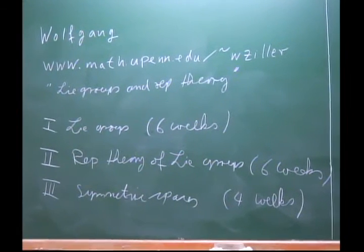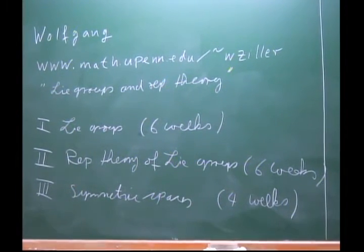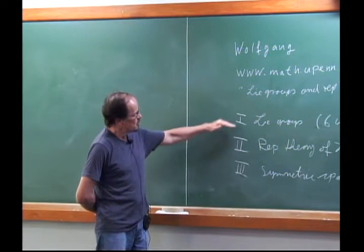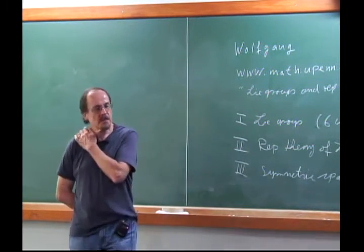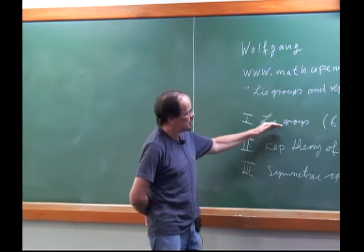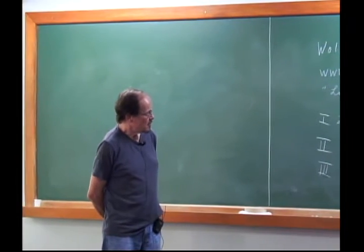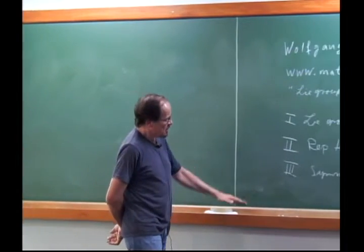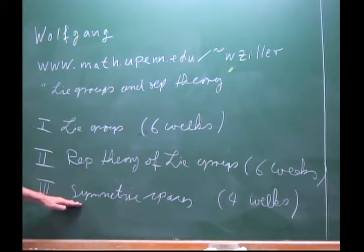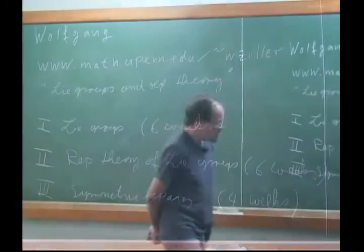As far as prerequisites are concerned, there's no Riemannian geometry required, although you might think so because of part three. For parts one and two, one has to know what a manifold is, what vector fields are, and what Lie brackets are. The last part will have a little bit of geometry, but one can also do it completely algebraically without doing any geometry whatsoever.